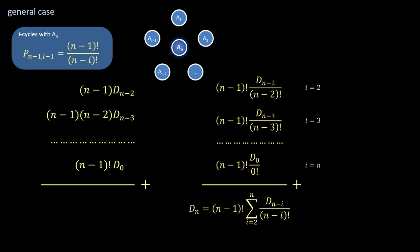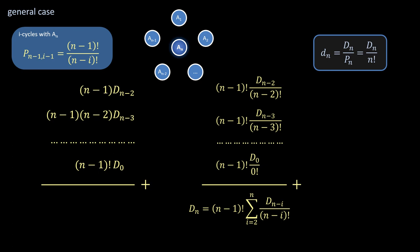To obtain the derangement fraction, denoted by lowercase d_n, divide this expression by P_n, or n factorial, rendering the following tidy result.